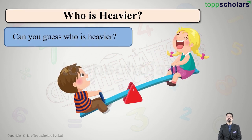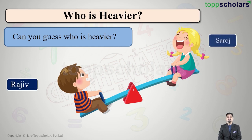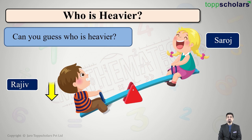We see Rajeev and Saroj playing on a seesaw. As soon as they sat on the seesaw, Rajeev's side went down whereas Saroj went up in the air. Can you tell students who is heavier here? Obviously the side which went down has got more weight.